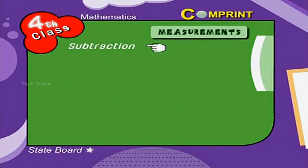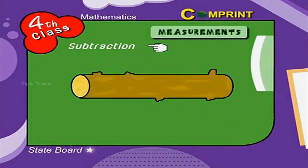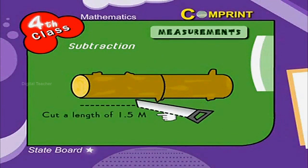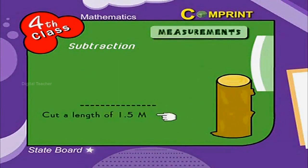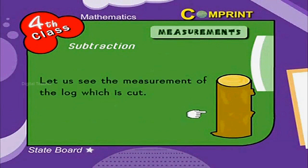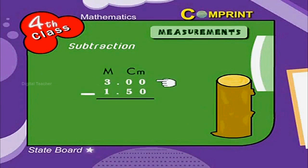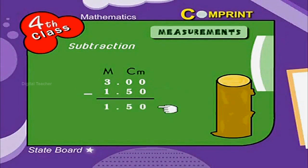Subtraction: Here is an example. Take a log of length 3 meters. Cut a length of 1.5 meters. Let us see the measurement of the log which is cut. 3 meters minus 1 meter 50 centimeters gives the answer: 1 meter 50 centimeters.